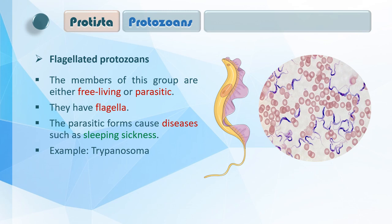Trypanosoma की cartoon image दिखाई है — ये organisms unicellular हैं। Figure में red blood cells दिख रहे हैं, और बीच-बीच में violet color के Trypanosomas दिख रहे हैं। Humans के अंदर Trypanosoma का infection होने से sleeping sickness होती है — उसमें इंसान की sleeping cycle change हो जाती है, वो दिन को सोता है और रात को जागता है। आप search करके देखें कि और कौन-कौन से symptoms दिखते हैं जब Trypanosoma humans को infect करता है।